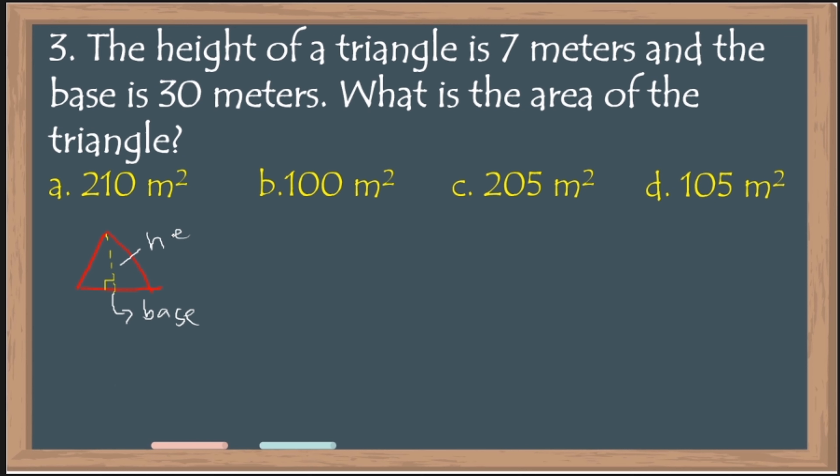So, eto yung kanyang height. Or, height is also the altitude. Tatandaan nya na, kasi baka sa ibang problem, hindi height ang ibigay, kundi yung altitude. Anyway, the same lang sila. So, hindi ito yung height, kundi yung line from this angle, papunta dun sa base, basta maka-form sya ng 90 degrees. That is the altitude or the height.